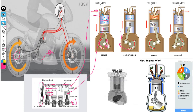When the spark is exhausted, the spark will be exhausted and it will be exhausted. Therefore, this is one cycle of the crankshaft.